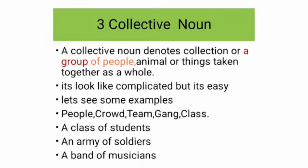Let's move forward. Next, collective nouns. A collective noun denotes a collection or a group of people, animals, or things taken together as a whole. It looks complicated but it's not. For example: crowd, team, gang, class — a class of students, an army of soldiers, a band of musicians.